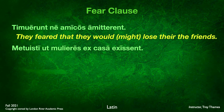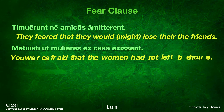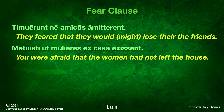Another example: meruisti ut mulieres ex casa exissent. You were afraid — again a perfect verb. The ut tells us it is a negative fear clause. You were afraid that the women had not left the house. Exissent is in the pluperfect, happening in the past prior to the main verb which is already in the past, so we translate it as 'had not left the house.'